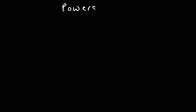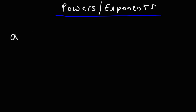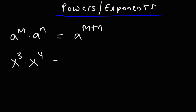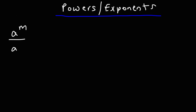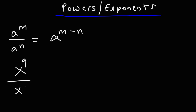Now let's talk about powers and exponents — particularly the rules associated with them. For multiplication, if you multiply variables of the same kind with different exponents, you add the exponents: a to the m times a to the n equals a to the (m plus n). For example, x cubed times x to the fourth is x to the seventh. For division, you subtract the exponents: a to the m divided by a to the n equals a to the (m minus n). So x to the 9 divided by x to the 4 is x to the 5.